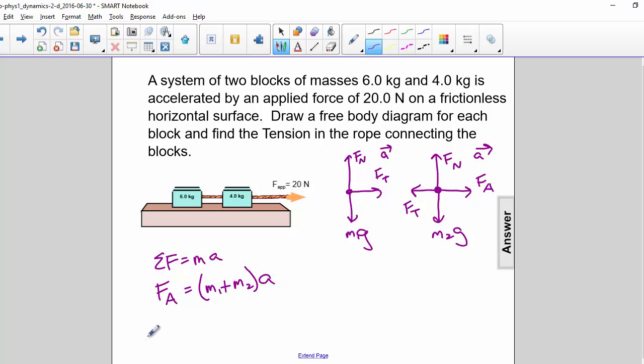So the acceleration A is the force applied divided by the total mass M1 plus M2. So that is 20 N divided by 6 plus 4 kg. So 20 divided by 10 is 2 m per second squared. So that is the acceleration of either block. They both have the same acceleration.